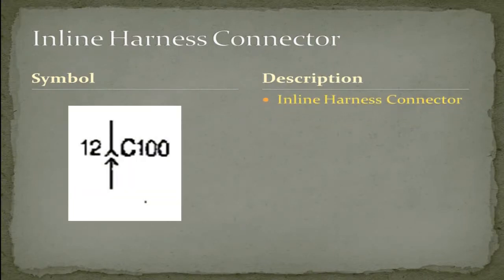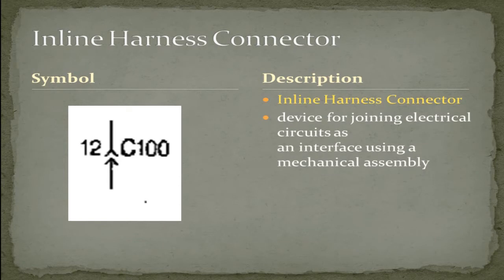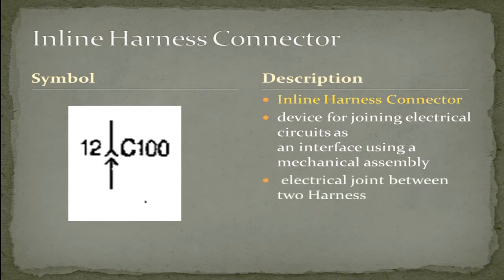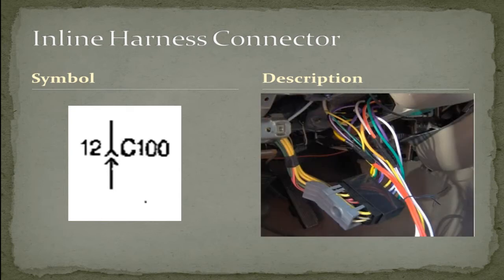An inline harness connector. A device for joining electrical circuits as an interface using mechanical assembly. An electrical joint between two harnesses. What I also want you to take note is that C100, that's a reference number and we'll be covering that at the end of this chapter. And as you can see, the inline harness connector represented here in this picture.